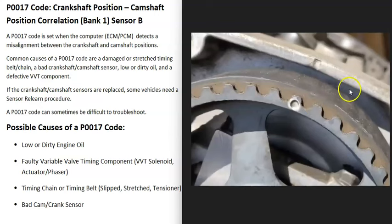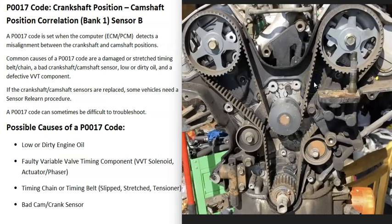Timing chains and belts can also stretch with age, which loosens everything up and throws off the timing. If the belt or timing chain is old and stretched, that could be the problem. There are also tensioners that keep everything tight — if a tensioner goes bad and isn't holding things tight anymore, that can also cause this code.